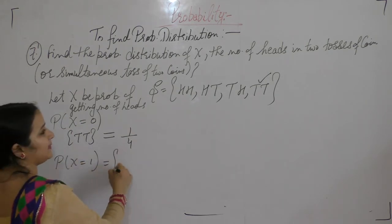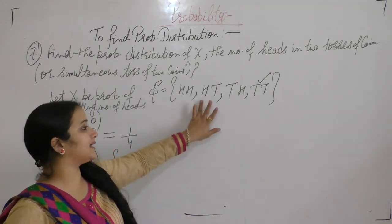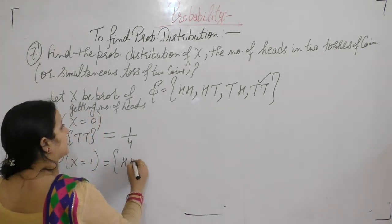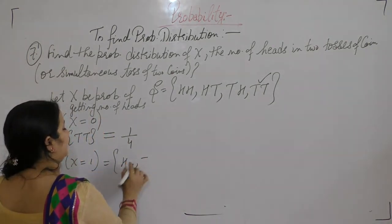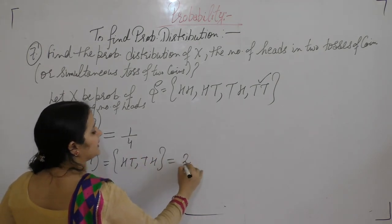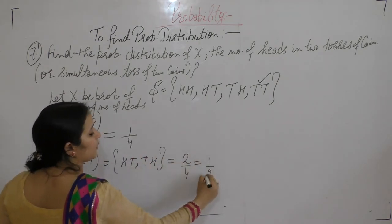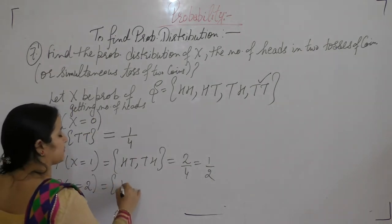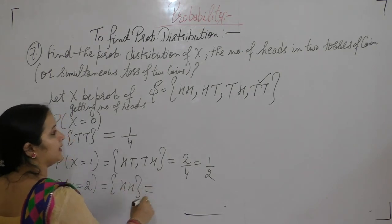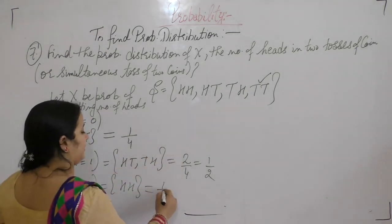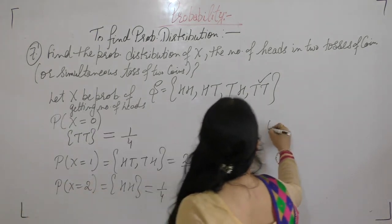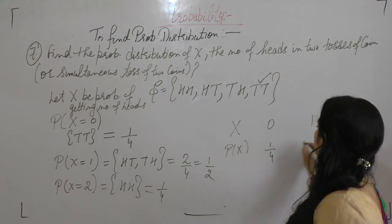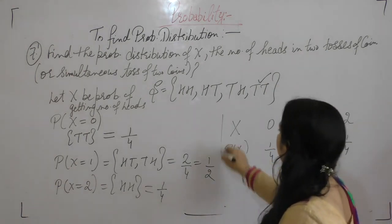Probability at X equals 1 means exactly 1 head. There are two outcomes: head-tail and tail-head. So probability is 2 by 4, that is 1 by 2. Next, X equals 2 means both heads, so probability is 1 by 4. So at X = 0, 1, and 2, the probabilities are 1 by 4, 1 by 2, and 1 by 4 respectively.